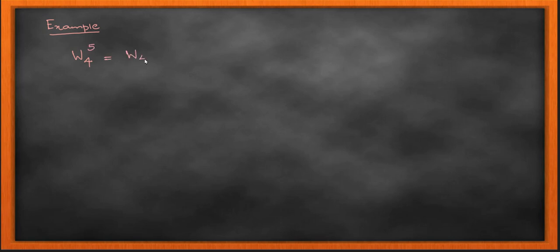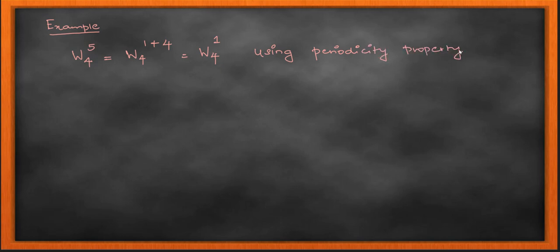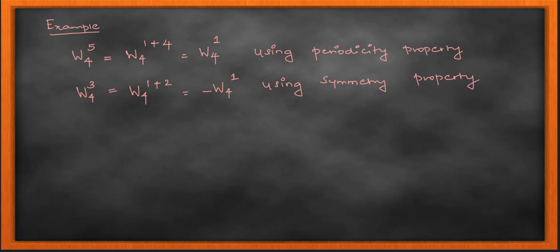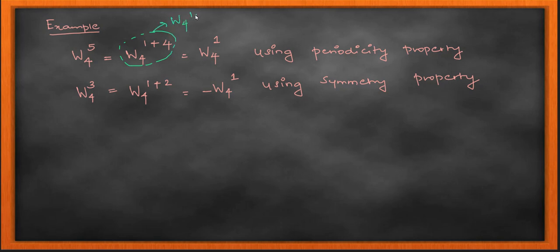Now let's see an example of how all this puts together to simplify DFT computation. For a four-point sequence, W4^5 = W4^(1+4) = W4^1 using the periodicity property. Next, W4^3 = W4^(1+2) = −W4^1 using the symmetry property, where N/2 = 2.